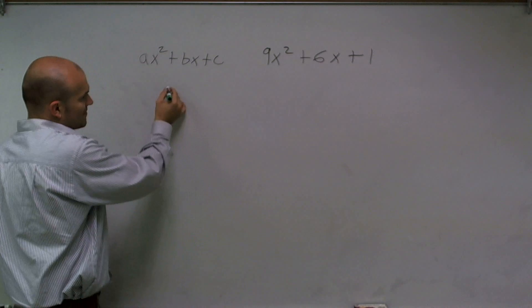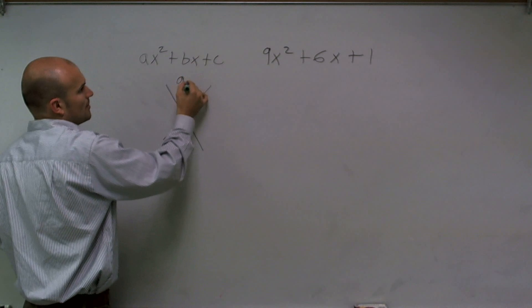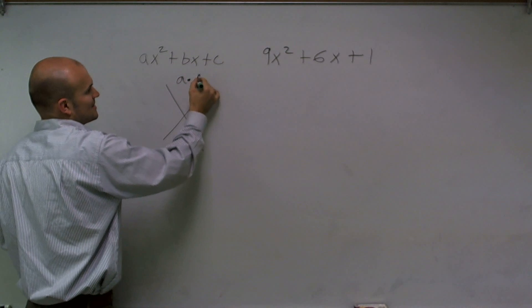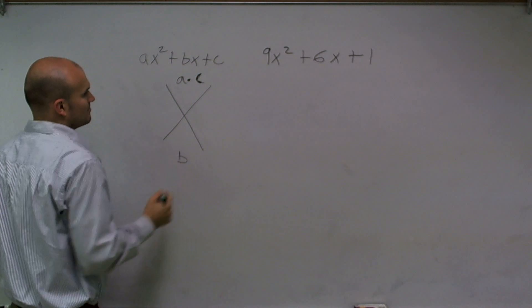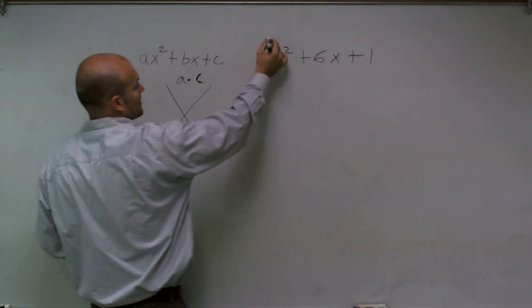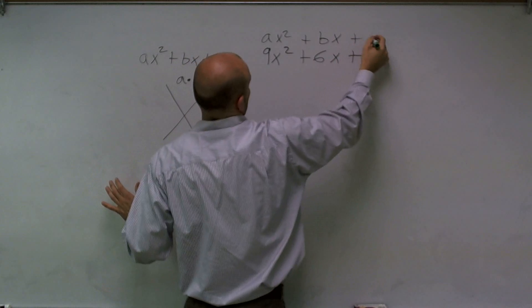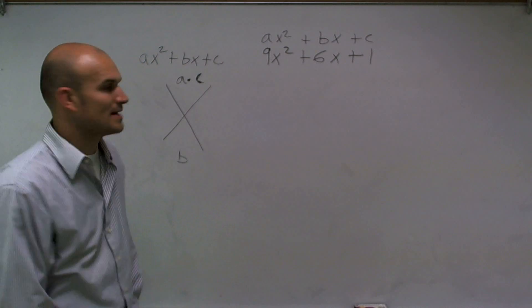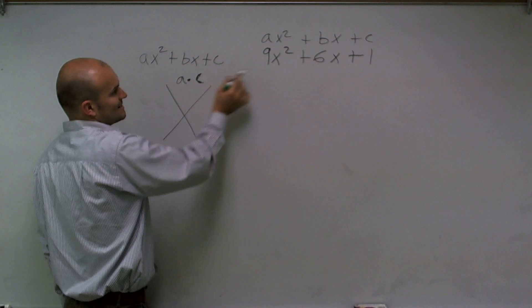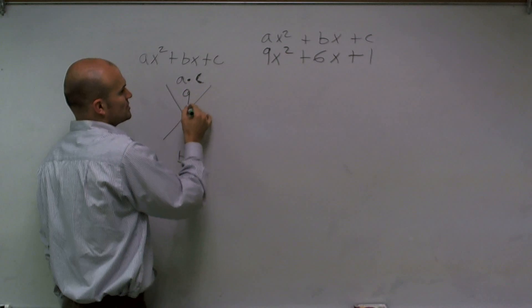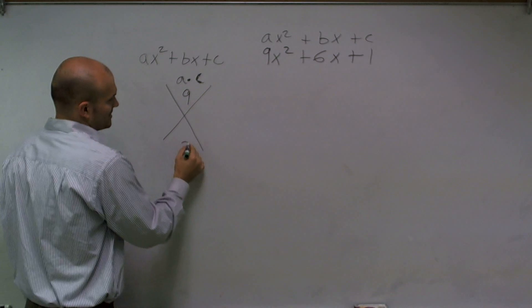Now, if I have it in quadratic form, I can factor the trinomial by multiplying my a times my c and then putting the b on the bottom. So in this term, I'm going to have my ax² + bx + c, as this is in quadratic form. So my a times c would be 9 times 1, which is 9, and my b is going to be 6.